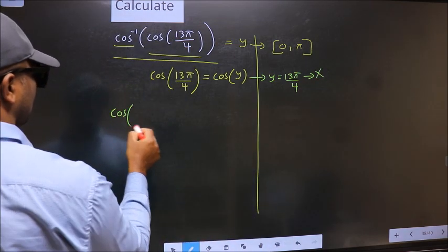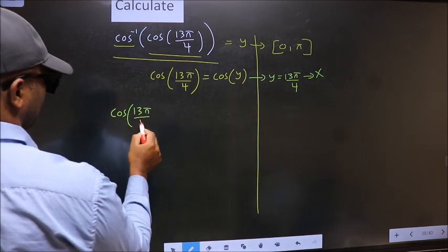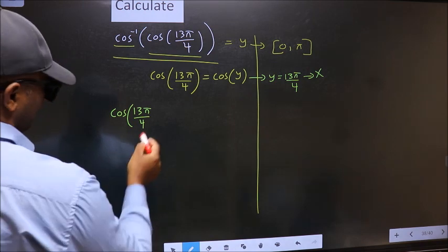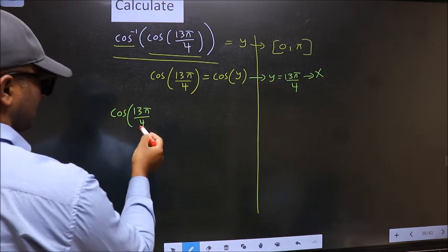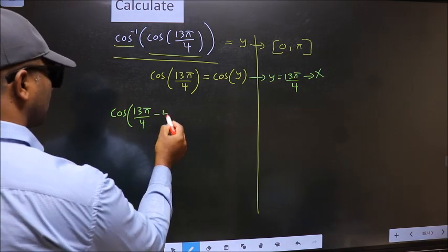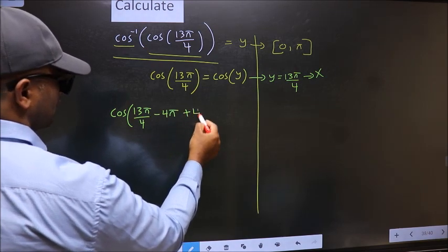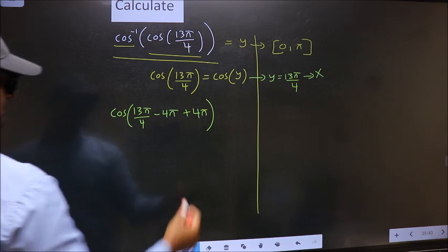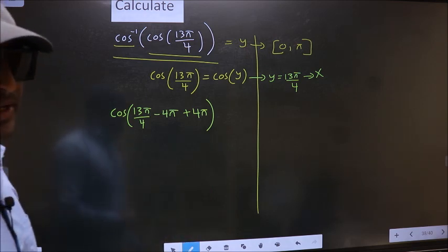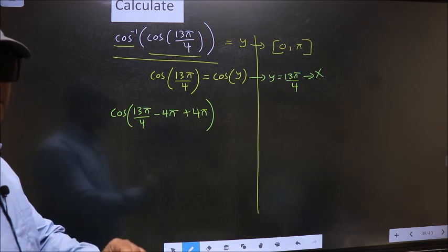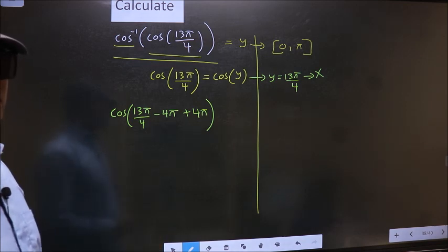Cos 13π by 4 exceeds that interval. So we should decrease it. To decrease I subtract 4π. Now whatever we are subtracting we should also add the same thing. Important point here. In cos inverse sums we should only subtract the even multiples of π.